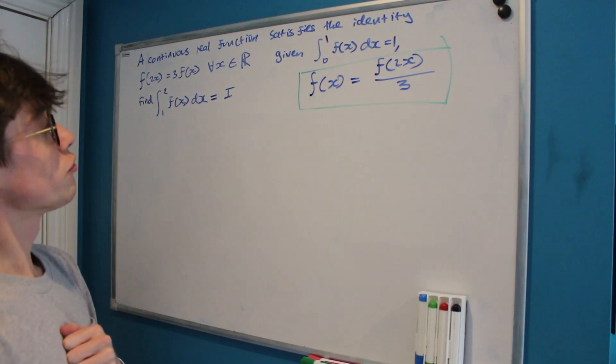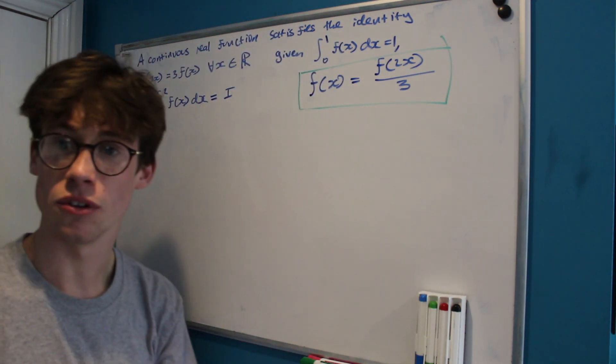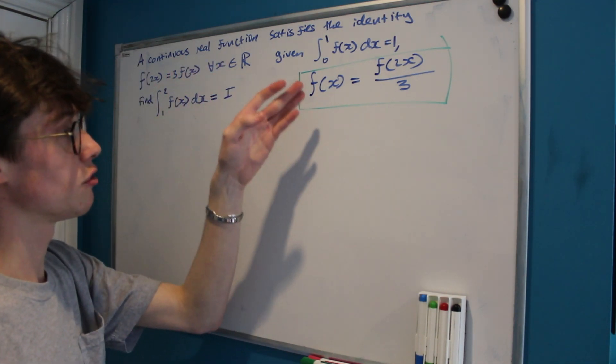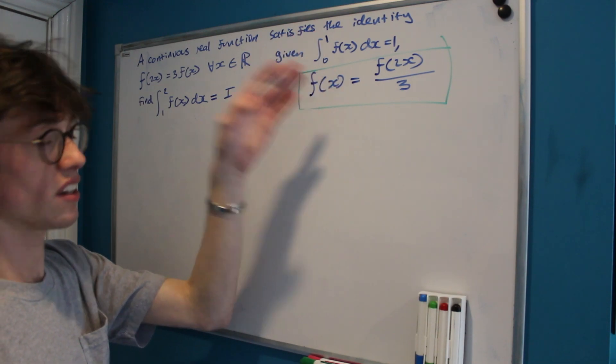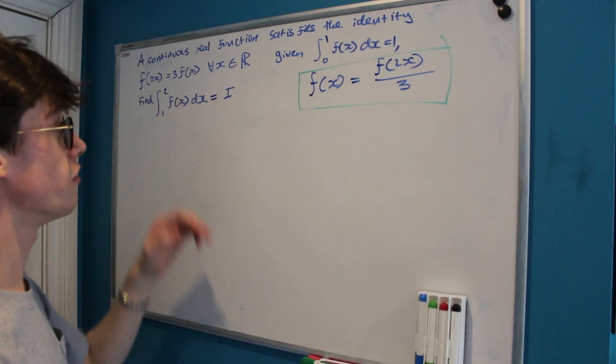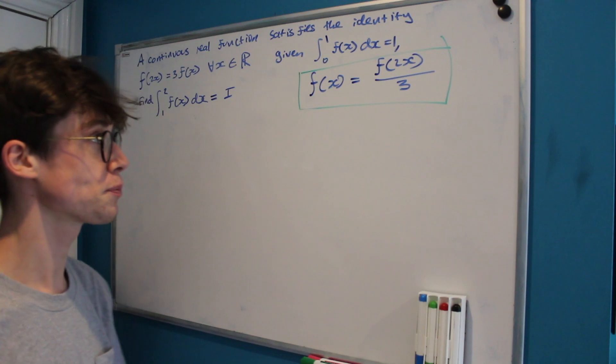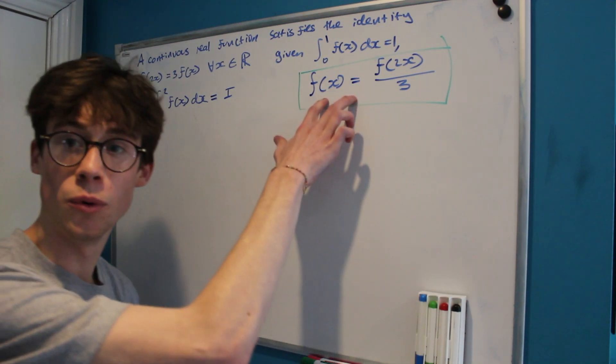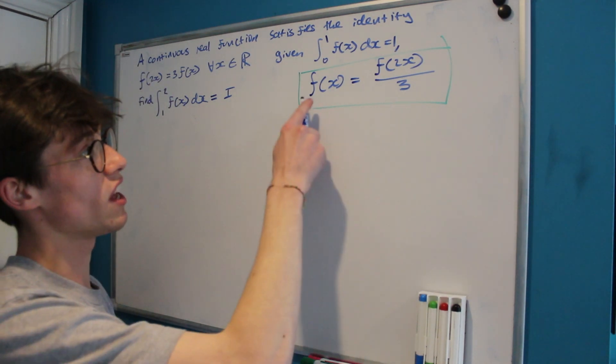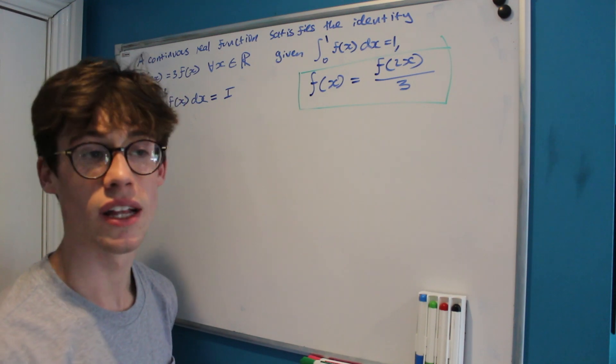We're given a continuous real function that satisfies the identity f(2x) equals 3 times f(x) for all values of x that are real, and we're given the integral from 0 to 1 of f(x) dx is equal to 1. What we're asked to find now is the integral from 1 to 2 of f(x) with respect to x, and I'm calling that integral i. We also have quite an important rearrangement of the relationship for the function we've been given, which is that f(x) is equal to f(2x) over 3, and we're going to be using that later on.